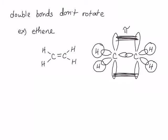So single bonds can rotate, double bonds and triple bonds cannot. We care about bond rotation because it leads to isomerism.